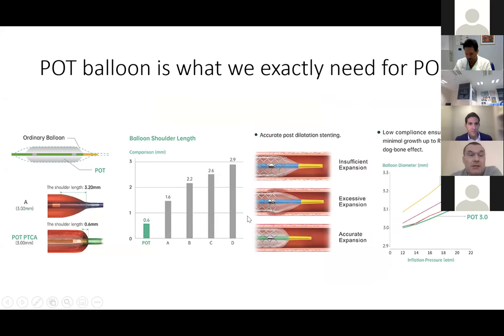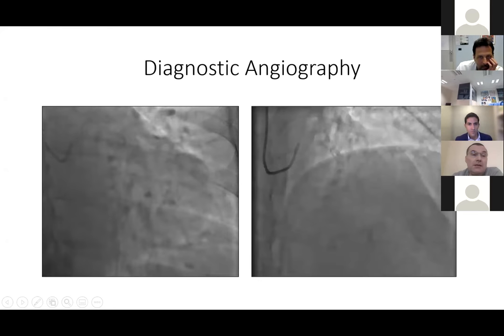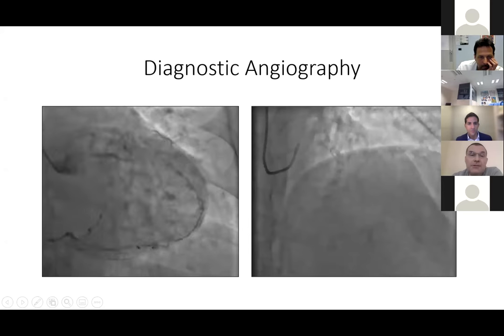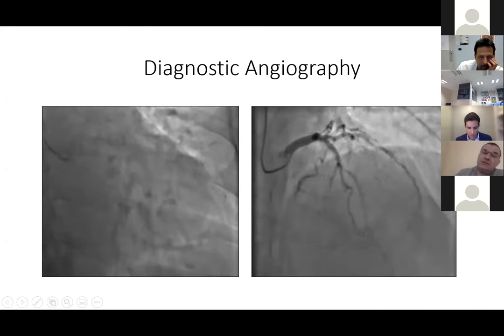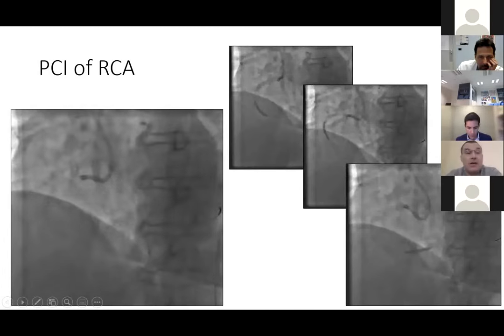It ensures complete opposition of the stent struts without distal distortion. I will show you several cases in patients how we perform this technique. The first patient is a 78-year-old female with a lot of risk factors, decreased ejection fraction of 42%, and we observed three-vessel disease with diffusely diseased LAD and occluded RCA with a huge PDA.